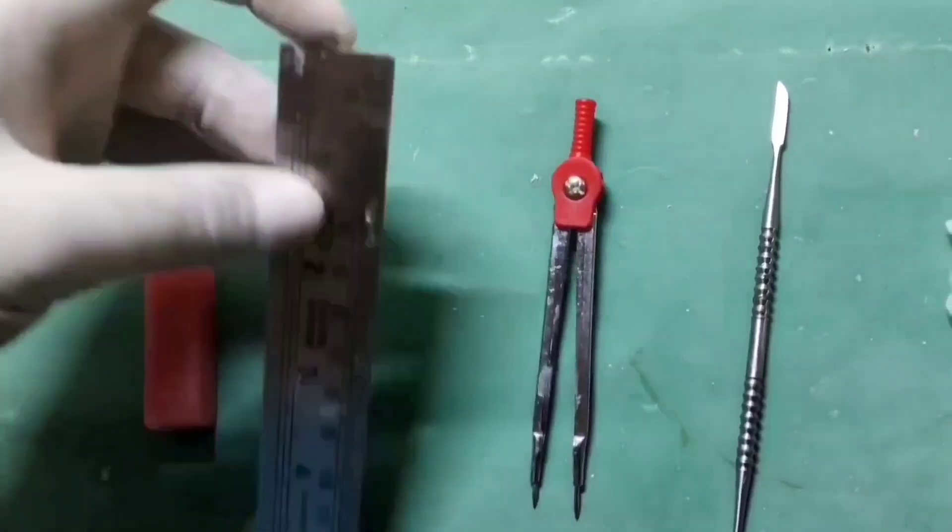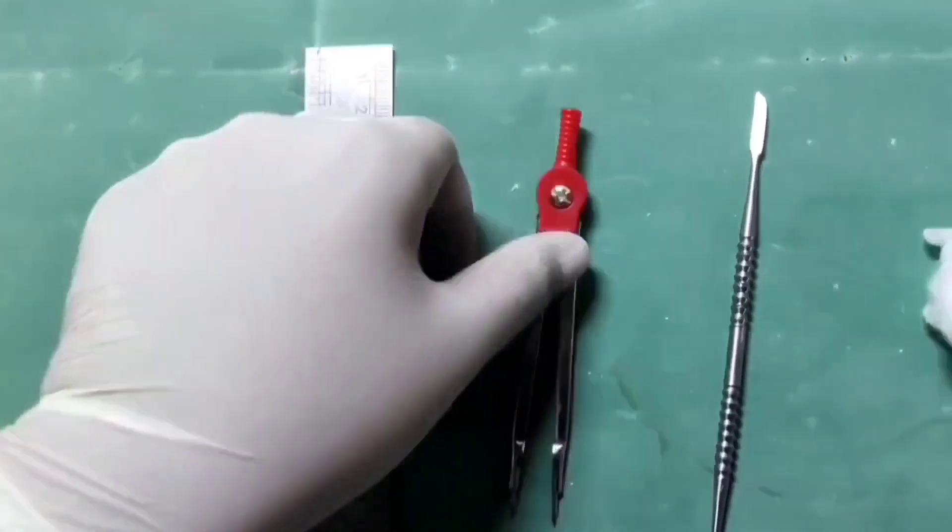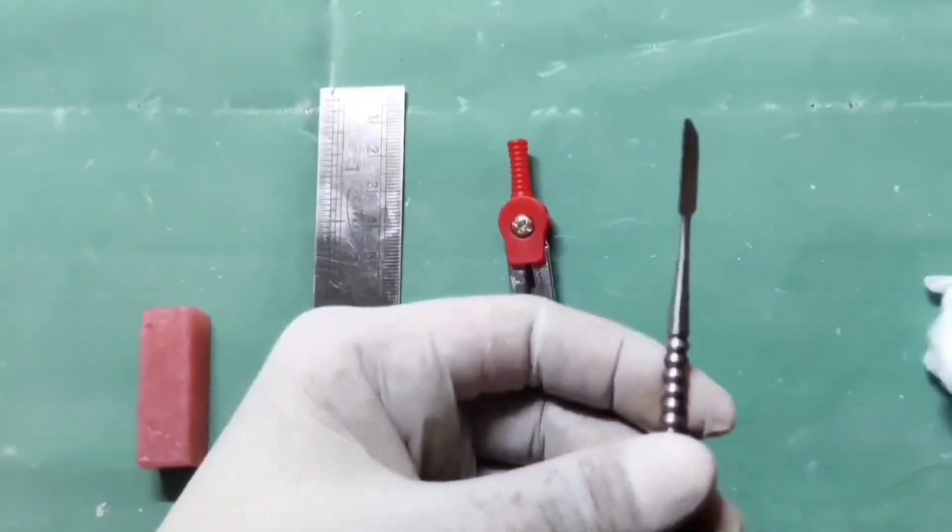The materials required are wax block, measuring scale, divider, and lacron carver with sharp and blunt end.